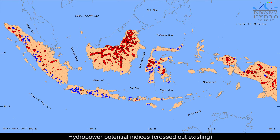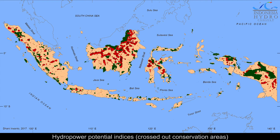Many hydropower plants have been built or are under development, marked as blue dots on this map. Therefore, the potential indices occupied by those plants need to be crossed out. Some of the potentials are in areas of conservation, indicated by the dark green regions on this map. Though it is possible to develop hydropower plants in these areas, they may pose complications.